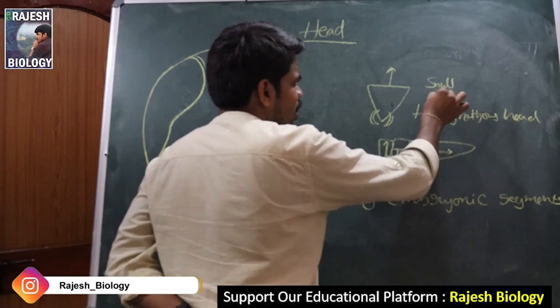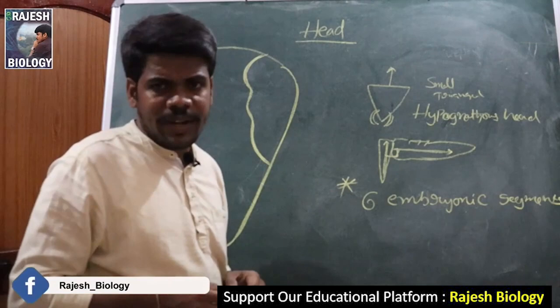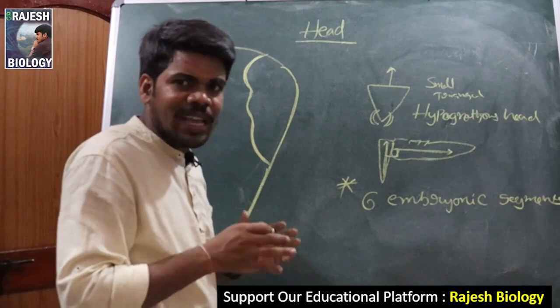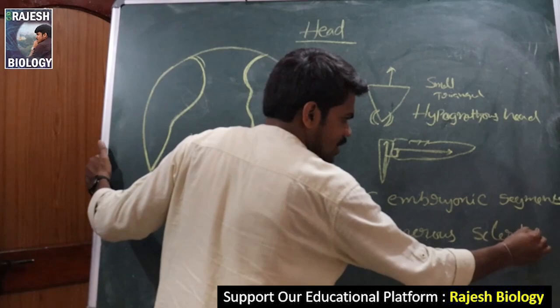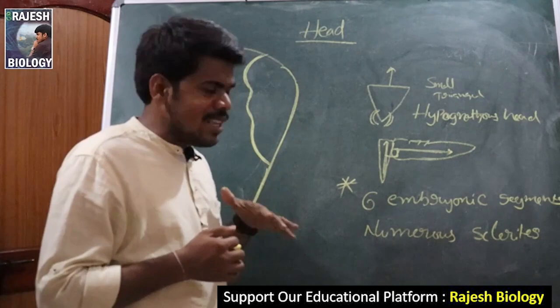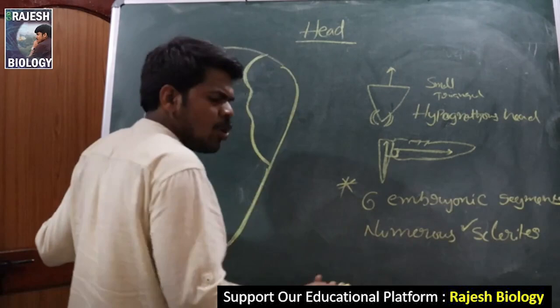The head is small and triangular in shape, at right angles to the body, and is called the hypognathous head. The head capsule is formed by sclerites — numerous sclerites together form the capsule. Don't get confused between segments and sclerites: there are only six segments, but these six segments have numerous sclerites. The six segments fuse to form the head capsule, which is actually formed by the sclerites.